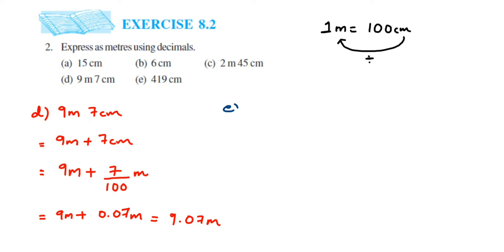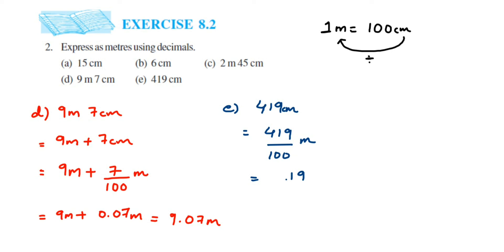The last question: 419 centimeters. Divide by 100. Two zeros in the denominator, so two places from the right: 9, then 1, place decimal, then 4 — giving 4.19 meters. That's it — that's how you convert centimeters to meters.